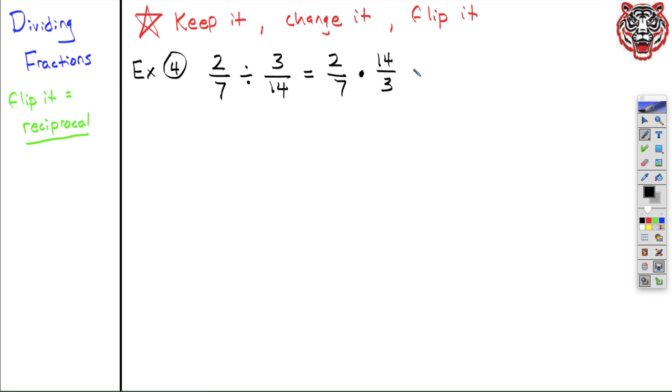So I'm going to take the reciprocal. So it used to be 3 fourteenths, and now it becomes 14 thirds. And then it's just the same thing as our multiplication problem in our previous slide. You multiply straight through. 2 times 14, 28. The denominator, the bottom, 7 times 3, 21.